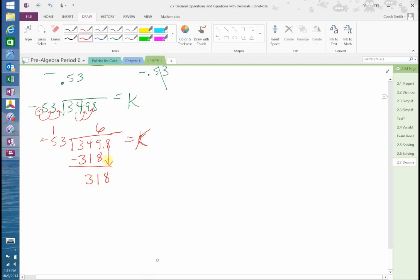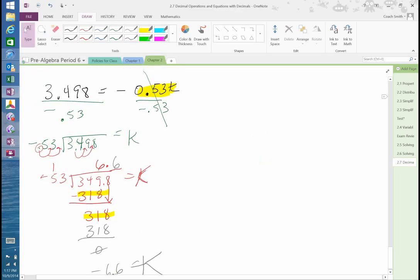Bring down the 8. Bring up the decimal. Well, now we know that that and that are the same. So, it's going to be 6 there. 318. 0. So, k is equal to negative 6.6. Okay? The reason it's negative is because there's one negative, one positive.